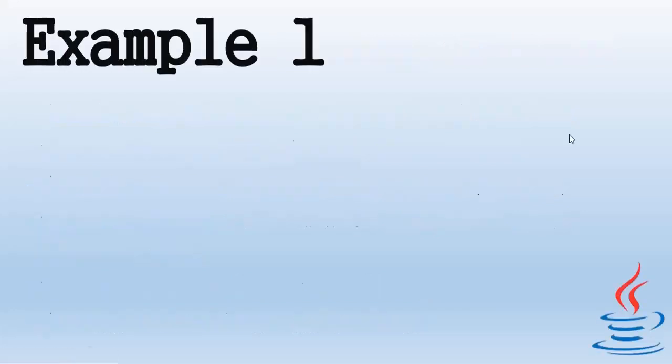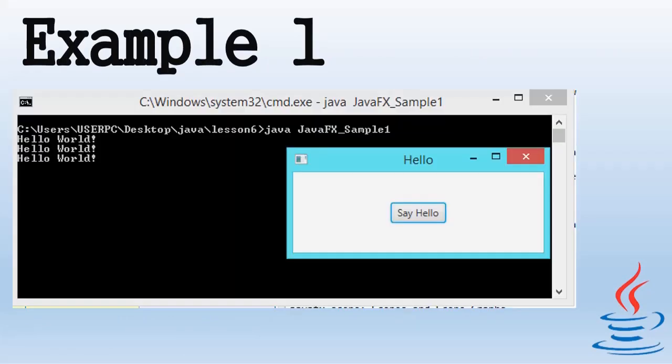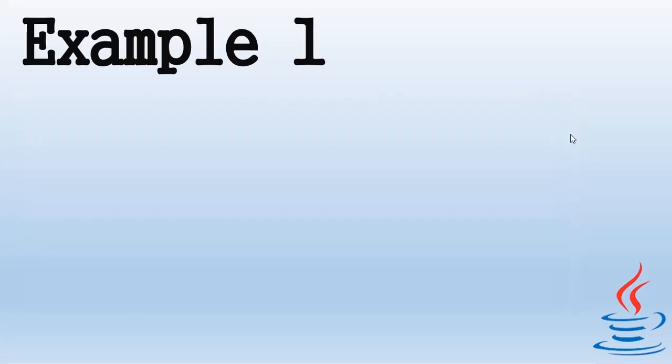Example number 1. In this application, we're going to create a graphical user interface where the user can click on a button inside the window. When this button is clicked, a message 'Hello World' will be displayed on our command window.